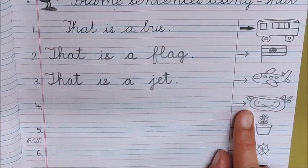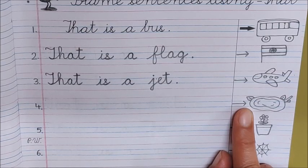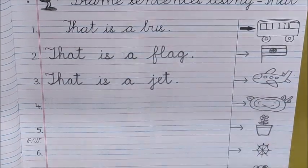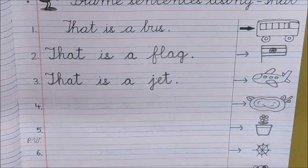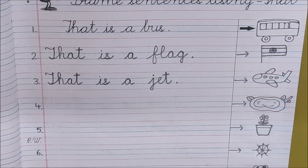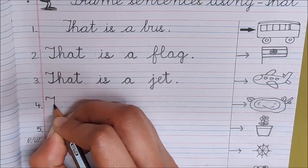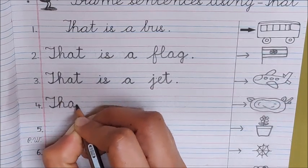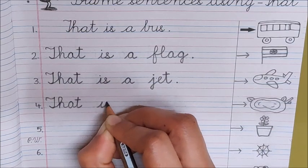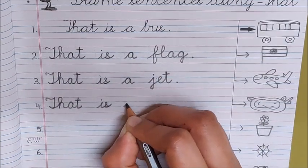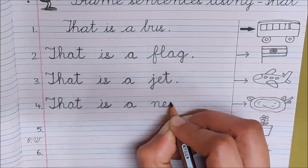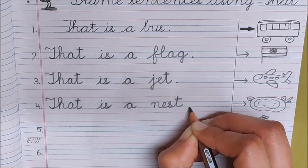Now look at the next picture. What is that? That is a nest. So write the sentence on your own. I am waiting for you to write first. Now my turn. That T H A T. That is a nest. Full stop.